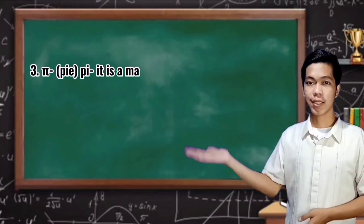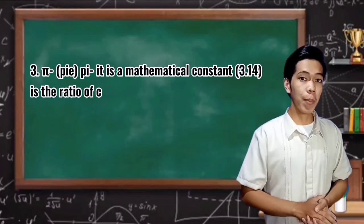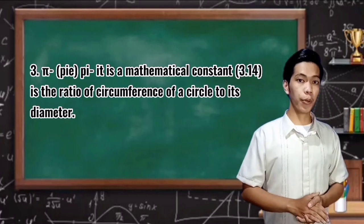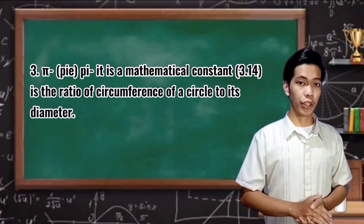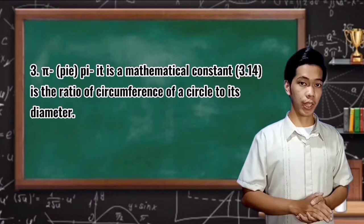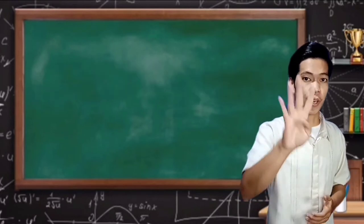Number 3: Pi. It is a mathematical constant, 3.14 is the ratio of circumference of a circle to its diameter. Number 4: The formula for the circumference.